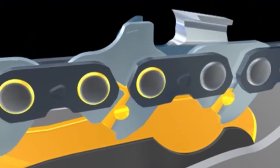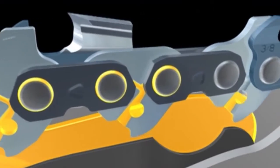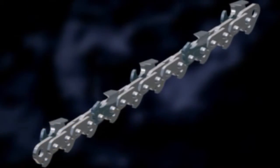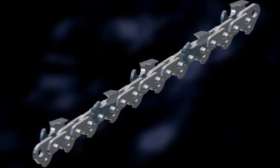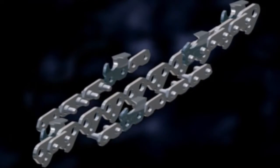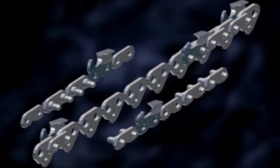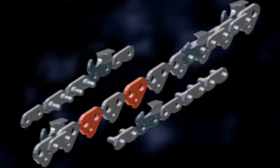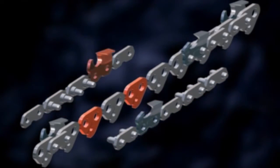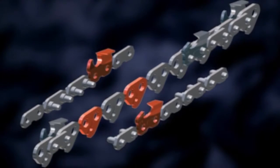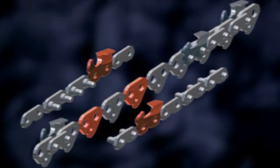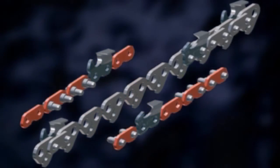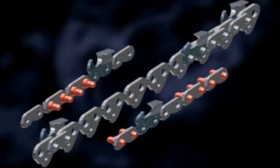STIHL saw chains are all constructed according to the same three-link principle. The two outside rows consist of cutting teeth and connecting links, while the central row contains the drive links that transfer the engine's performance from the sprocket to the chain. After every second drive link comes an alternating right or left-sided cutting tooth. The connecting links are arranged in the gaps on the opposite side of the cutting teeth, and all the parts are joined together by rivets.